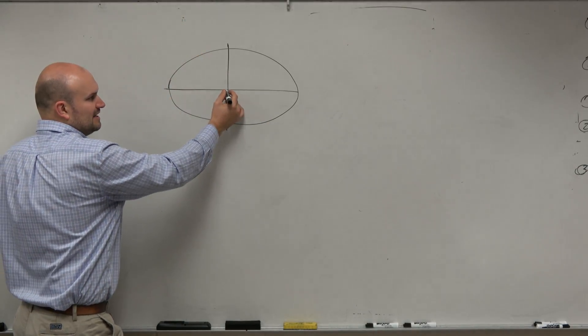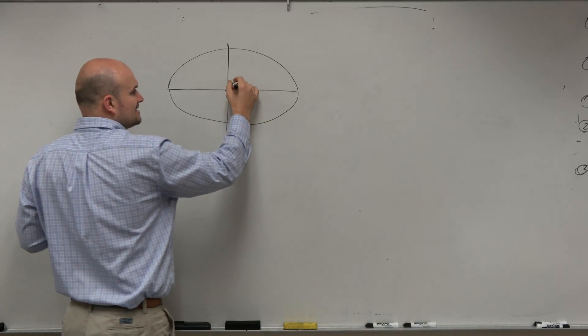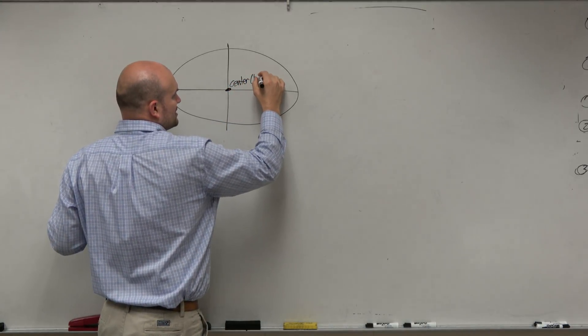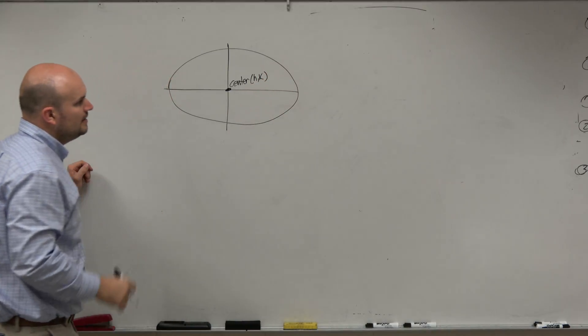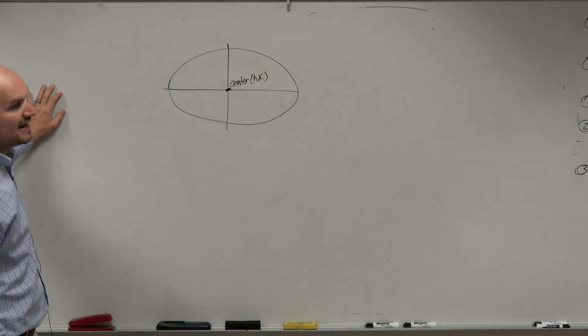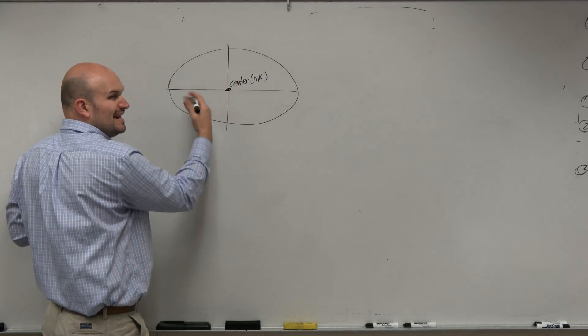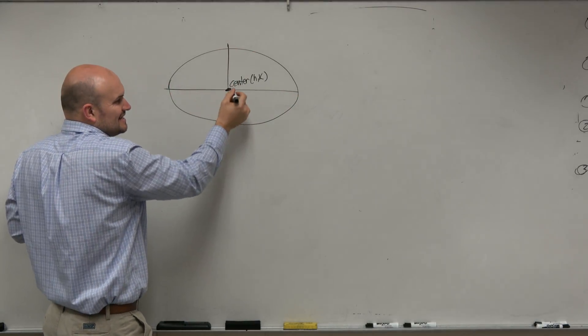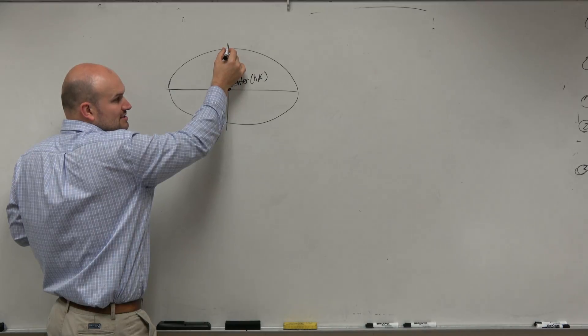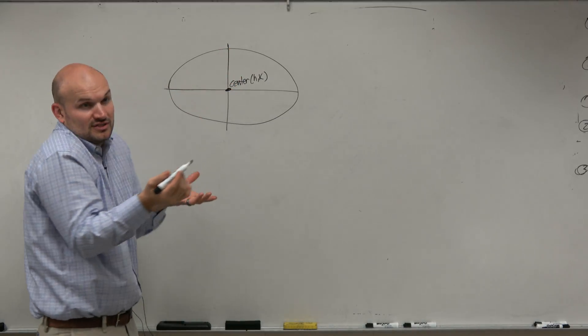So we talked about the center is kind of like in the circle, where the center is h comma k. So we had our center, which was represented h comma k. And then we had these kind of two radiuses that we kind of talked about, or distances, from the center, the short distance in here. Because it's not a circle. It doesn't have a radius.